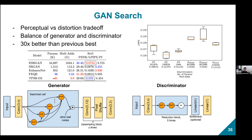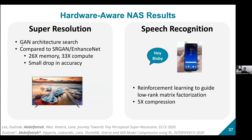Our TPSR model showed almost 30x improvement across both memory and compute compared to heavyweight super resolution models, with only a small drop in accuracy. This was already efficient enough to run on-device on Samsung TVs.